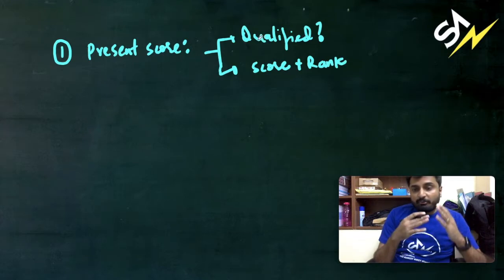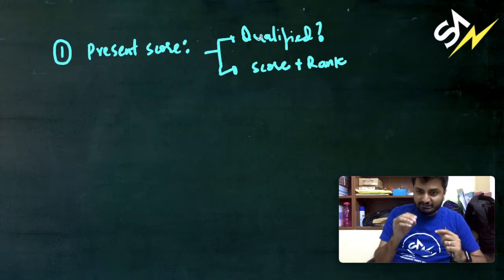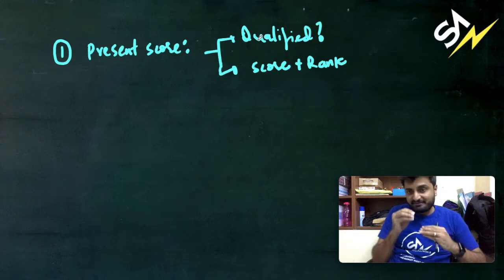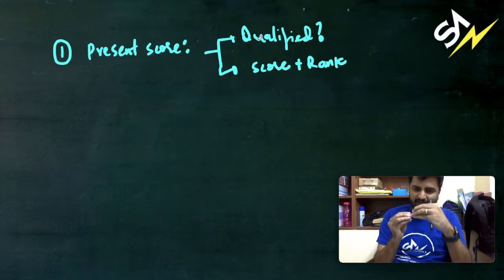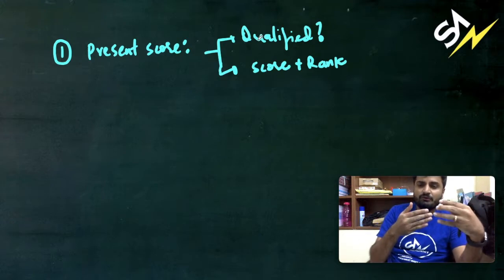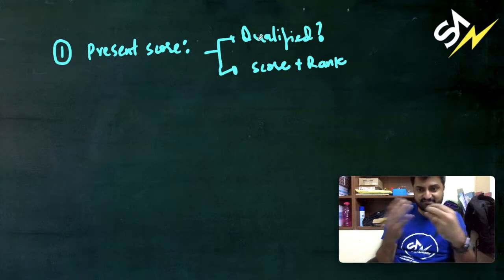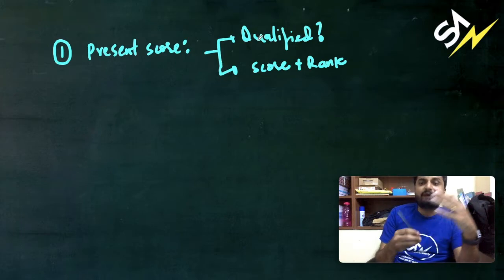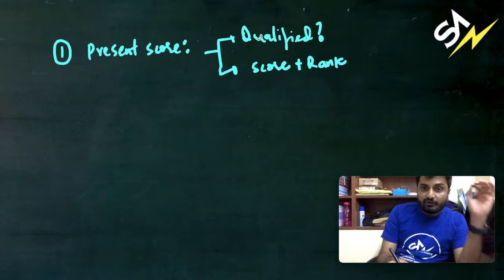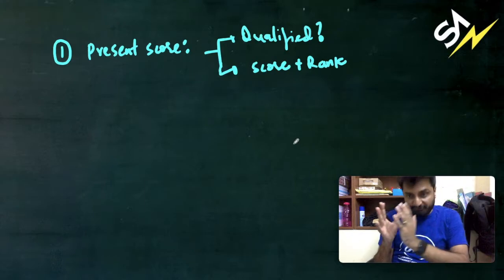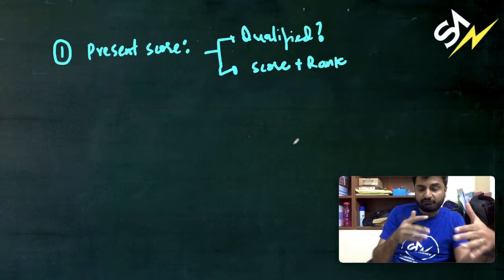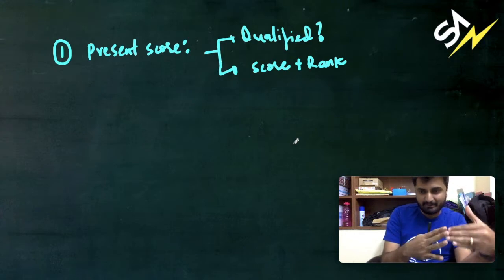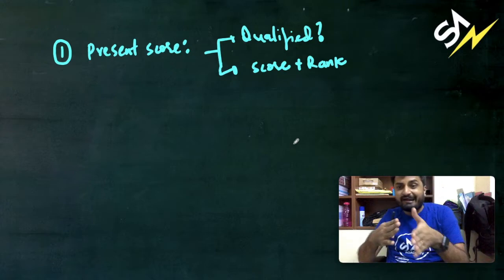The second question you have to ask is what is your score as well as the rank. When we talk about the first point, the first important factor which you need to consider is have you qualified for the exam. Usually the qualifying mark will be a very low mark which is required to appear for the counselling. You might not get a seat but that's enough to appear for the counselling. In case the student has qualified for the examination, then you are already somewhat familiar with the basics and the fundamentals.